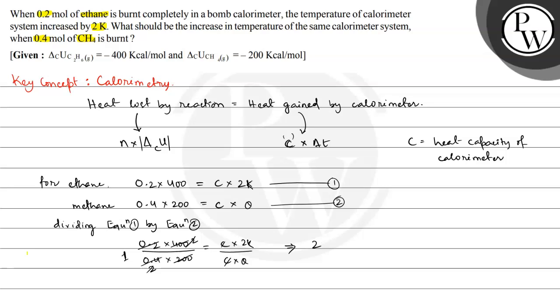And this is equal to 2K divided by theta. So simplifying, we will get 2K is equal to theta, or the temperature difference is 2 Kelvin.